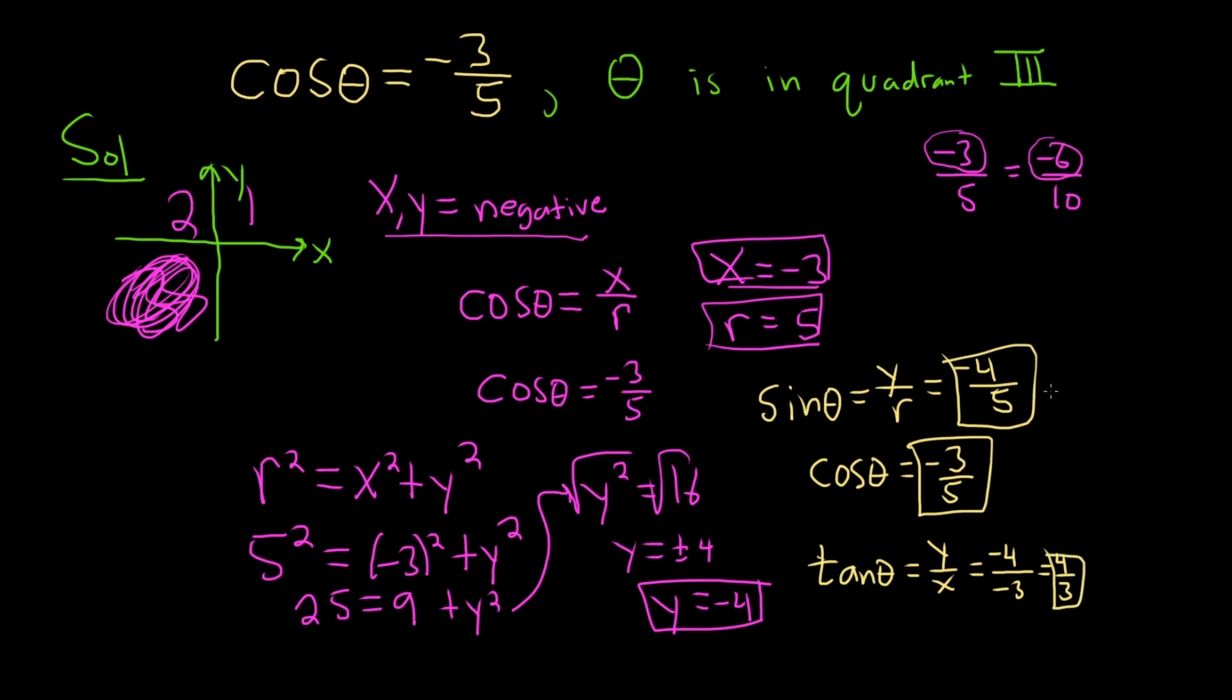To find the other functions, we can just flip them because they will all be reciprocal functions. So the reciprocal of sine is cosecant. So you would get negative 5 over 4. And the reciprocal of cosine is secant. So this would be negative 5 over 3. And the reciprocal of tangent would be cotangent. So this is 3 over 4. And those would be the six trig function values of theta.